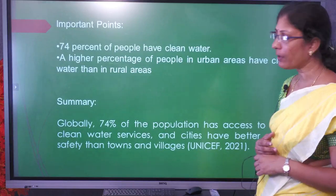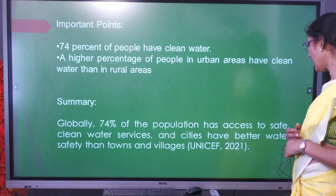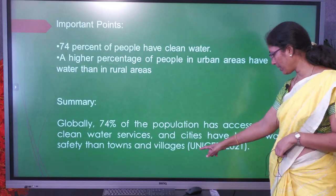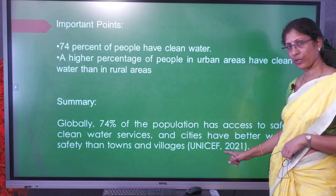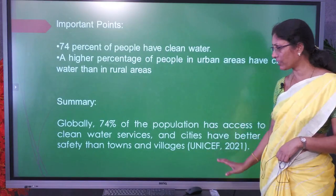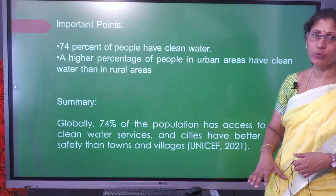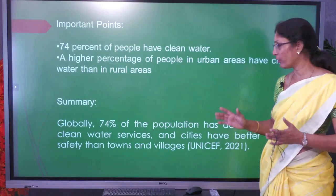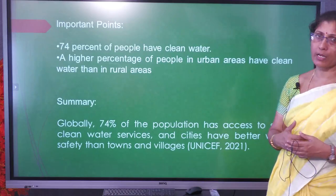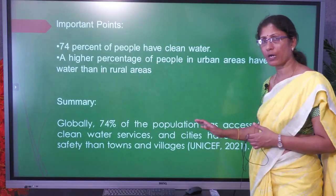See how the summary can be written: '74% of the population has access to safe clean water services, and cities have better water safety than towns and villages (UNICEF, 2021).' I cannot say this is the only correct sentence for the summary — you can give it in other words also. But at the end, you should present how much of the population has access to clean safe drinking water and which areas have greater access. The content should not be disturbed.